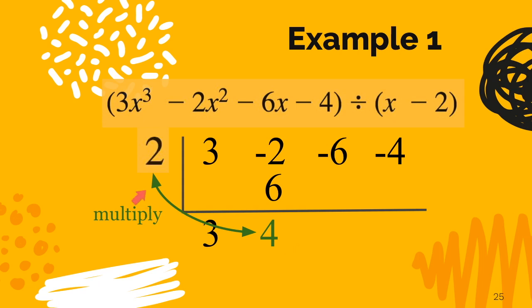And now we're going to repeat the process. We're going to take this 2 and multiply by the 4. And we get 8. Write it right underneath the negative 6. And now you can probably guess what we're going to do with these two numbers. We are going to add these two numbers. So positive 8 and negative 6 is positive 2.